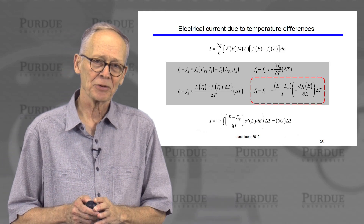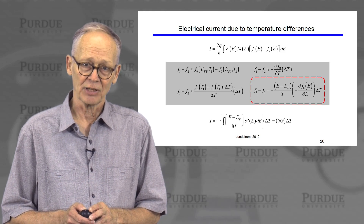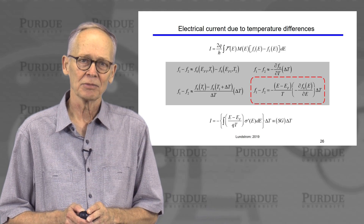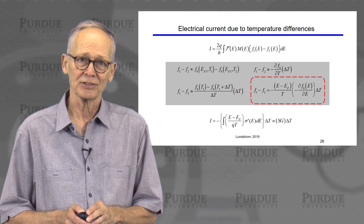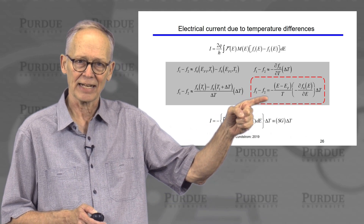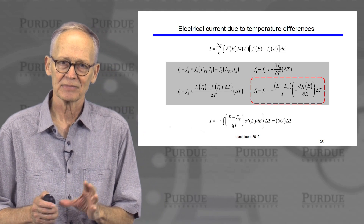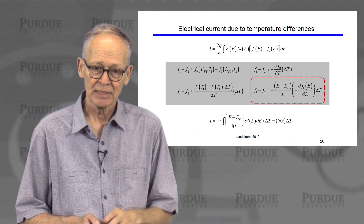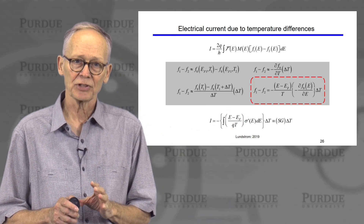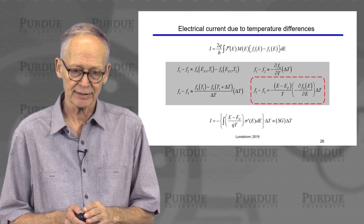There's some mathematics I'll leave out. If you take the Fermi function and differentiate it with respect to temperature, you'll see that it is similar to the differentiation with respect to energy, except that you bring down a couple of extra factors — specifically, (E minus E_F) over temperature. So now we have an expression that is valid when we have small differences in temperature between the two contacts, which is the situation we're interested in.